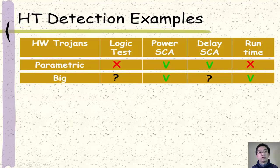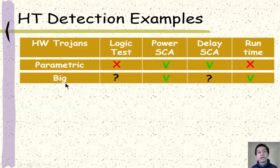For a big trojan, depending on whether it changes functionality or not, we may be able to detect it using logical test. However, it may not be easy because with a big hardware trojan, exhaustively searching all test patterns is difficult. The big hardware trojan will cause large variation in power consumption, so we can detect it by power side channel analysis. For path delay based detection, it depends on whether the big trojan is on a measurable path or not — we can either detect it or we may not.